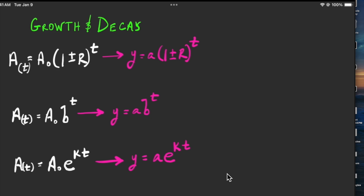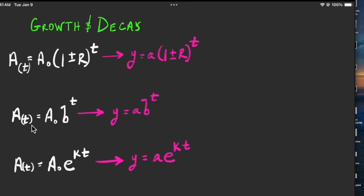In this video we're going to talk about growth and decay problems and in particular when to use each of these formulas. There is a lot of overlap, meaning you can use the formula below or the formula in the middle for a particular problem. I like to use the version in white: the amount of a substance or population A(t) after a given time t equals the initial amount times one plus or minus r raised to the duration of time. You often see the shorthand version in pink: y equals a times that same expression.